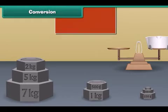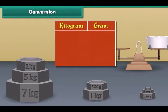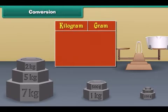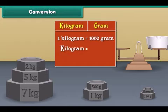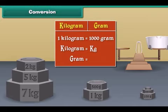The words kilogram and gram are used to express weight. One kilogram is equal to 1000 grams. Kilogram is also represented as kg, and gram is also represented as g.